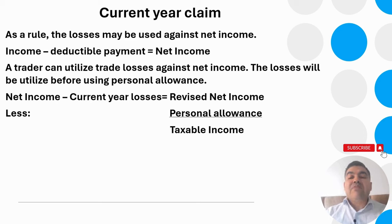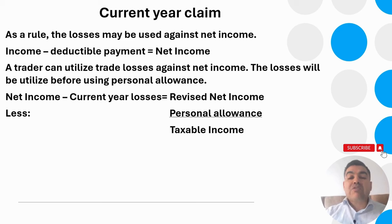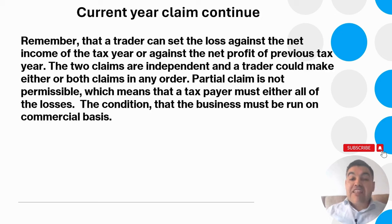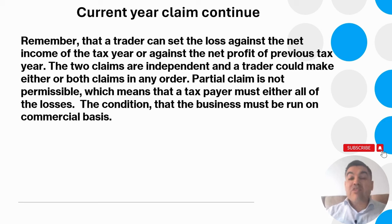In this video I will be showing only how to utilize losses against other income — I have a separate video on calculating income tax in the UK. A trader can set the loss against the net income of the current tax year or against the net income of the previous tax year. The two claims are independent, so you can make either or both in any order — current year claim or carry back.